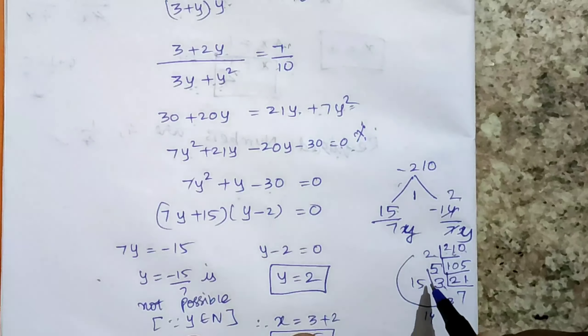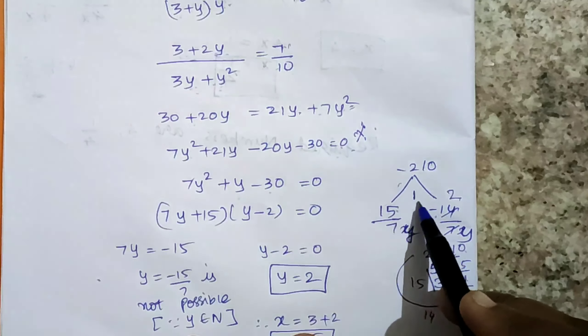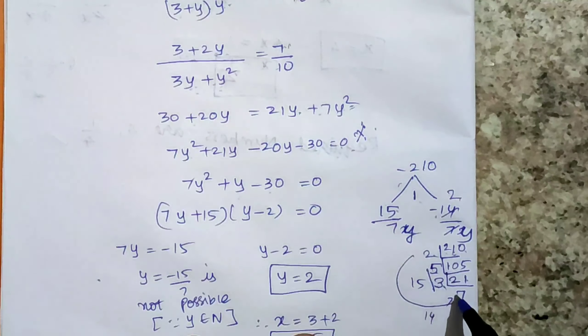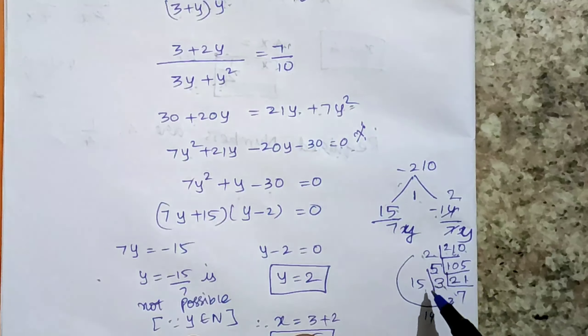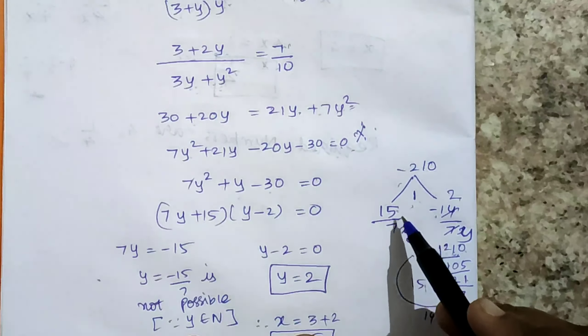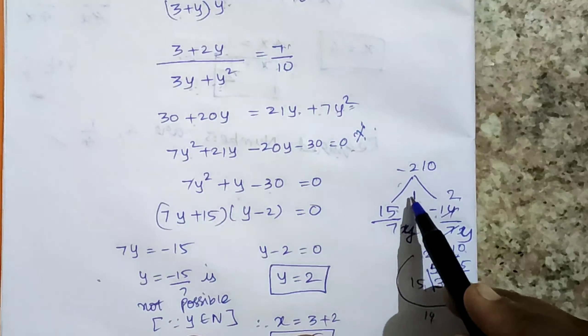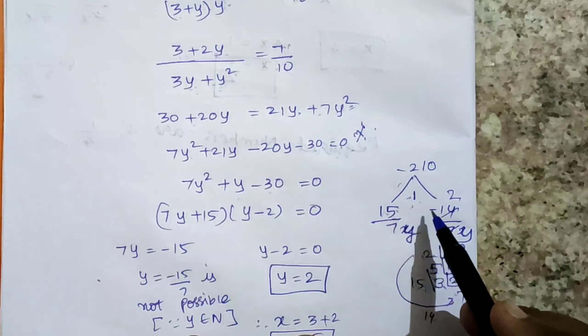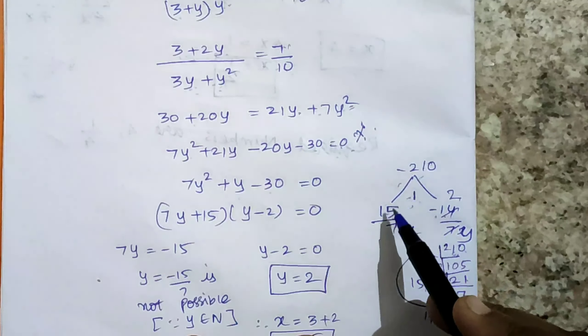You find that the difference must be 1. 3 times 5 is 15, 2 times 7 is 14. So 15 times 14 definitely gives 210. 15 minus 14 is 1. If it's a negative sign, the coefficient's central sign, you fix it to the greater number. So 15 and minus 14 gives minus 210, and 15 minus 14 is 1.